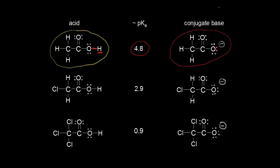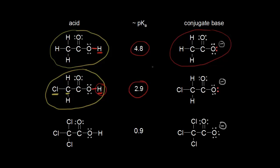Comparing acetic acid to chloroacetic acid: we now have a chlorine attached to the carbon. The acidic proton on chloroacetic acid leaves these electrons in red on the oxygen, giving it a negative one formal charge. The approximate pKa value for this proton is about 2.9, compared to 4.8 for acetic acid — going from 4.8 to 2.9.